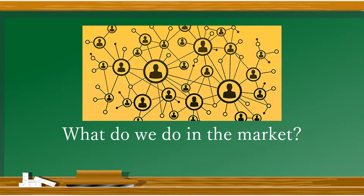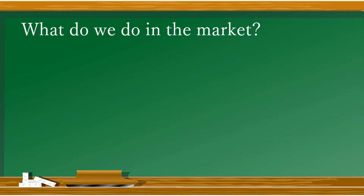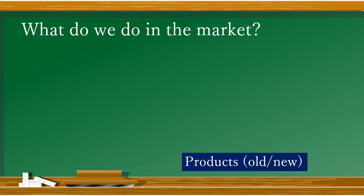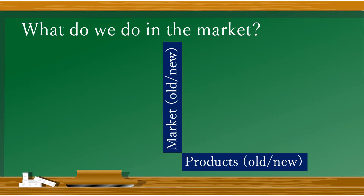Now, with our products, what should we do in markets? Well, we can make a matrix for that problem too. Let's make our decision criteria an either-or statement: either we are bringing our old products to the market or brand new ones, and we are either staying in the same old markets or entering new ones. Now we can come up with four strategy decisions for any combination of our criteria.